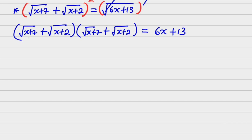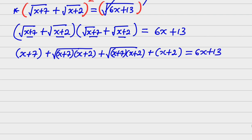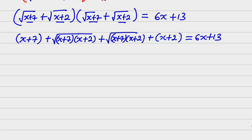Expanding: root of (x plus 7) times root of (x plus 7) gives x plus 7. Root of (x plus 7) times root of (x plus 2) gives root of (x plus 7)(x plus 2). Root of (x plus 2) times root of (x plus 2) gives x plus 2. All of this equals 6x plus 13.